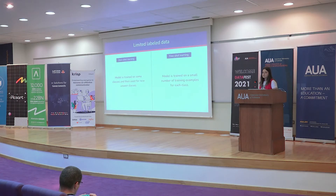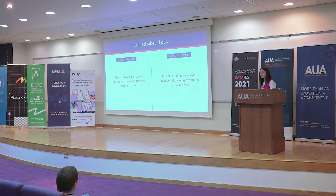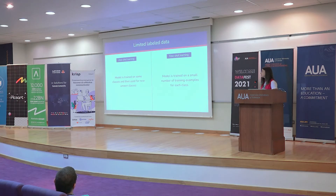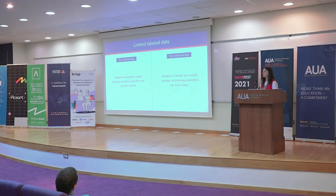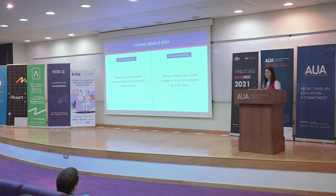What we suggest is to use limited label data techniques, which can be zero-shot learning — where the model is trained on several classes and then new classes are predicted — and few-shot learning, which is our choice, where the model is trained on a small limited amount of examples per class. So we are going with few-shot learning.